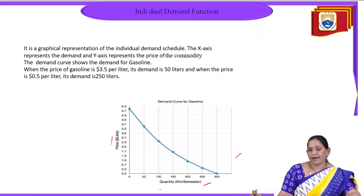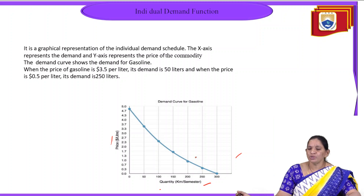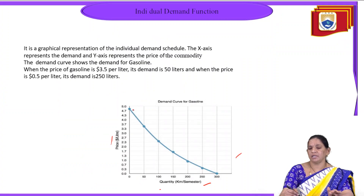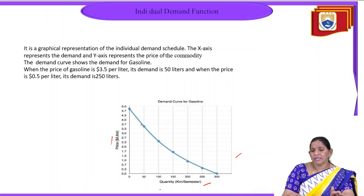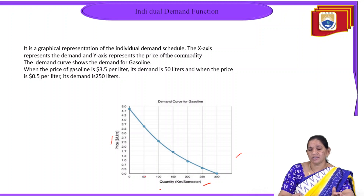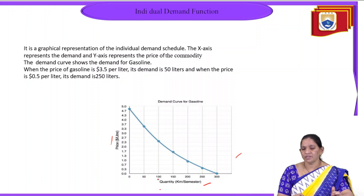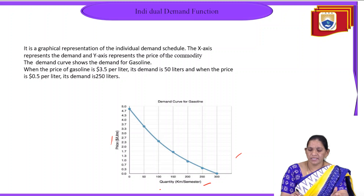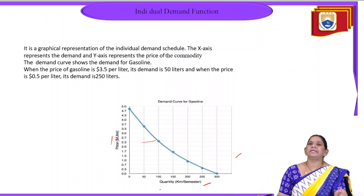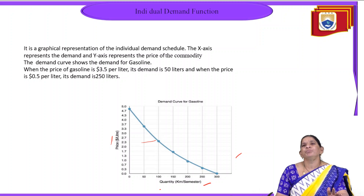The demand curve for gasoline, for example, shows that as the price increases, the quantity demanded decreases. At a lower price, the consumer purchased 50 units; as the price went higher, demand fell — to 70 units at a lower price point, then 37, then 23. In the individual demand function, as the price of goods increases, the quantity demanded decreases.